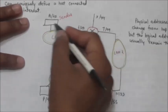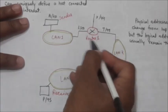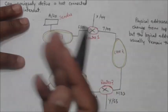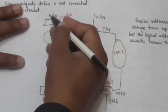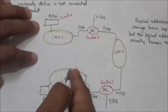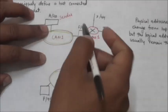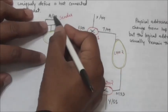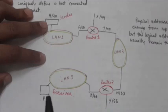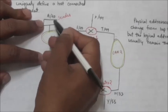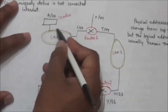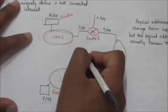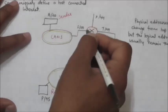The network layer passes the physical address of Router 1 to the data link layer. The data link layer encapsulates the packet with the physical destination address (the physical address of Router 1) and the physical source address (20). The frame created at the sender is received by every device on LAN 1, but it is discarded by all except Router 1.